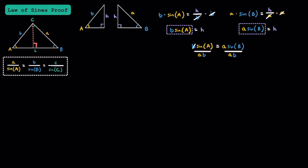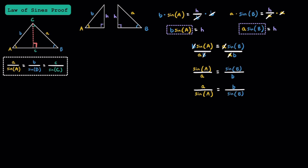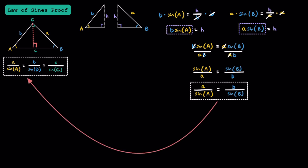By dividing both sides by AB, the B's on the left side cancel out and the A's on the right side cancel out. That leaves us with sine of A over a is equal to sine of B over b. While you could use it in this form, we can reciprocate both sides to get the standard form. Hopefully you can see the resemblance of the formula now.